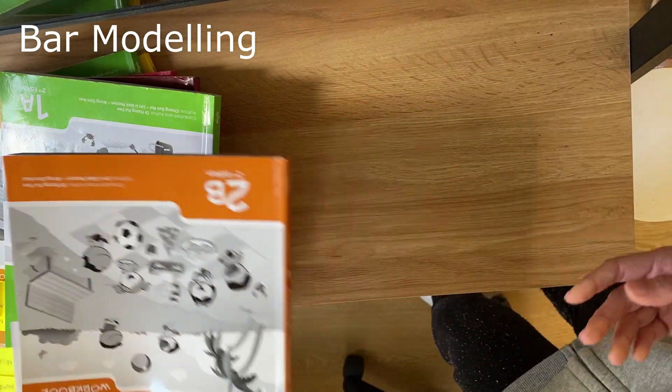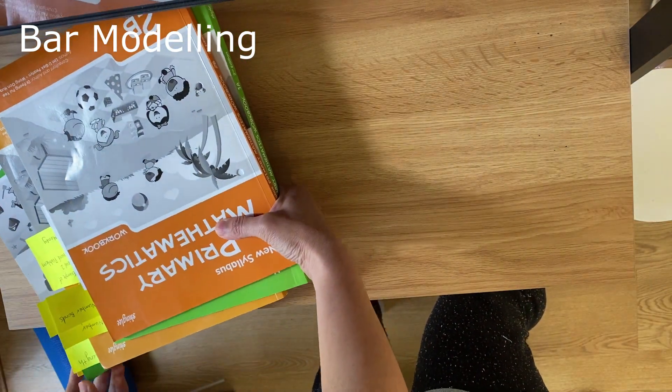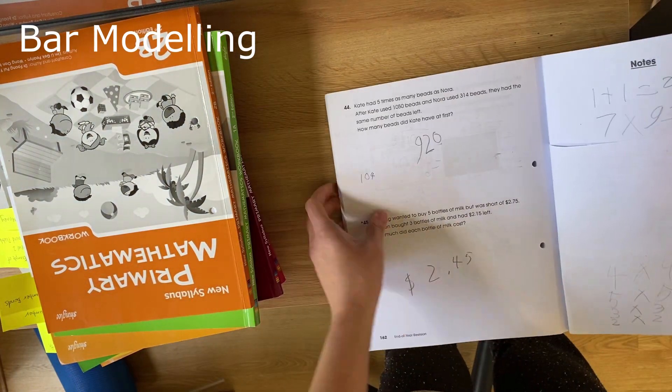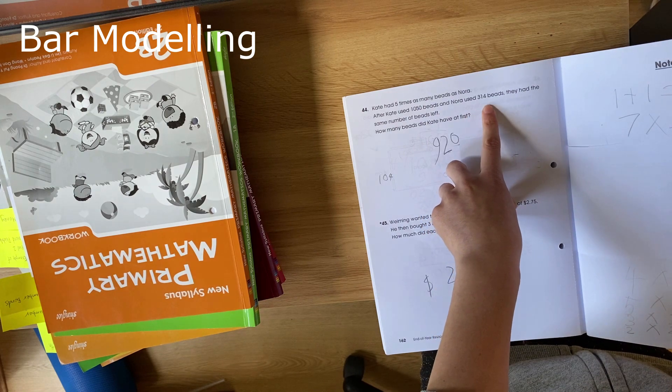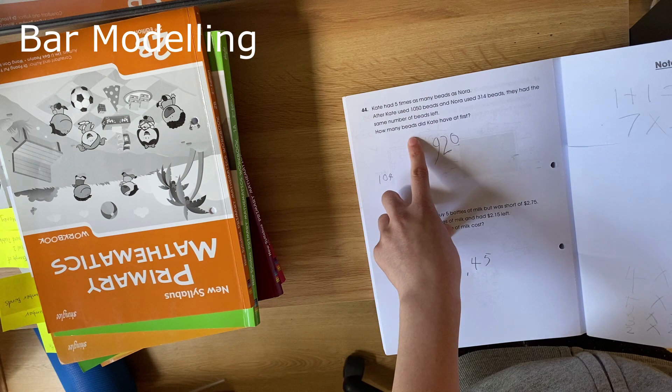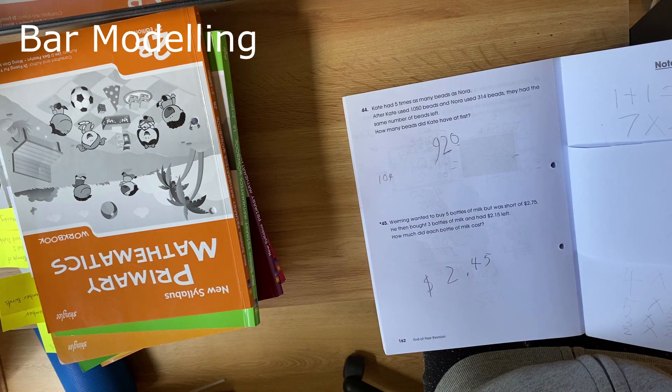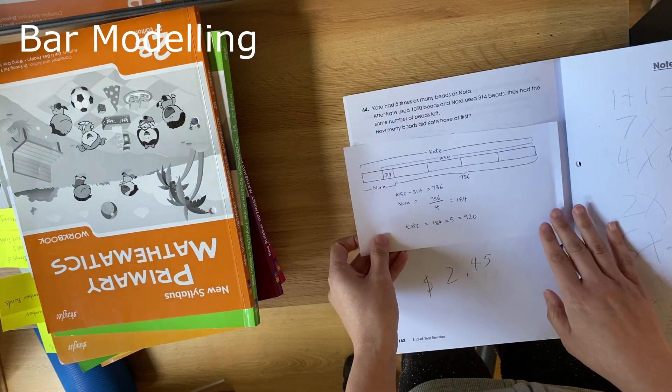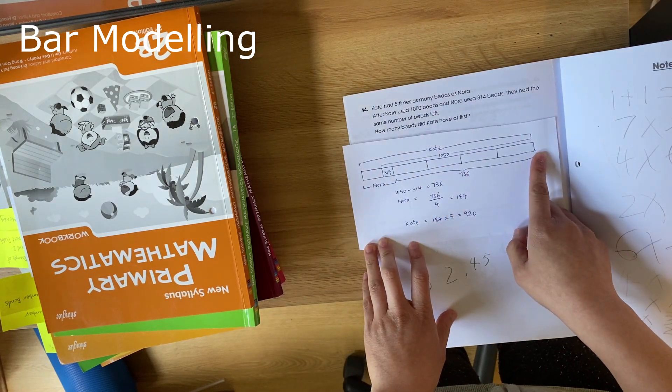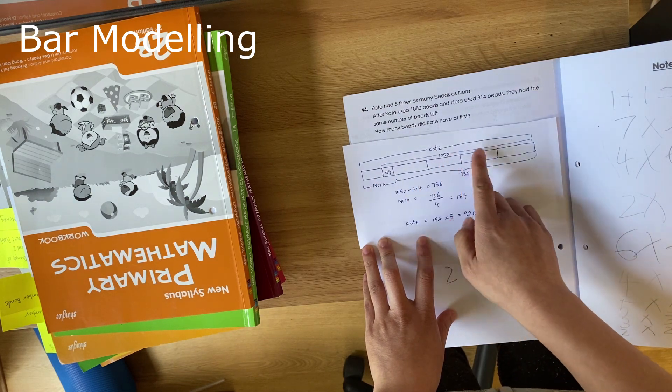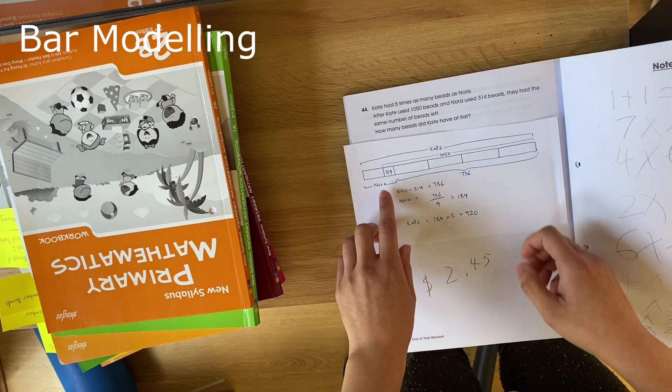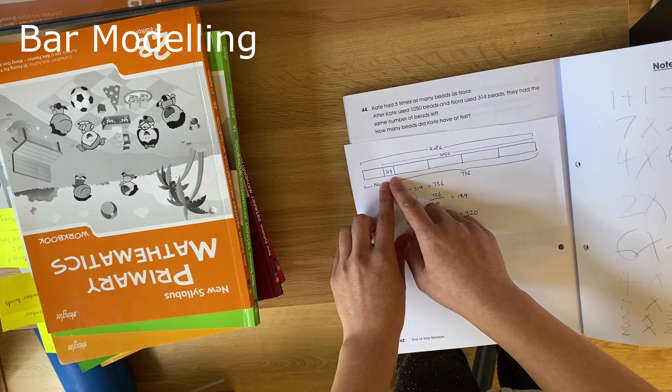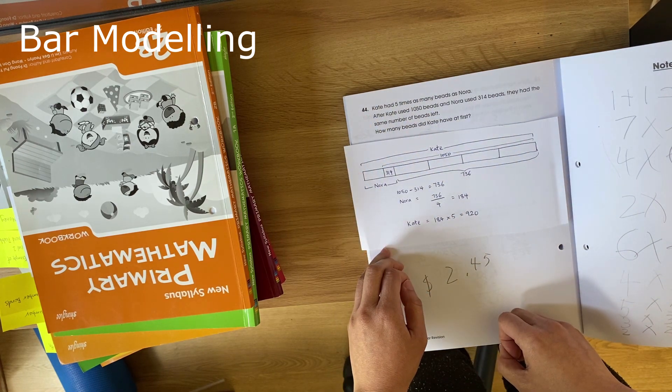I'll show you another bar modelling example from the level 4. Alright, so this one, Kate had five times as many beads as Nora. Kate used 1050 beads and Nora used 314 beads. They had the same number of beads left. How many beads did Kate have at first? So that again, I can work out using algebra pretty easily, but that's not what they're looking for here. So they want you to put all the information here into a bar model. So Kate had five times as many beads as Nora. So one, two, three, four, five to represent Kate and one to represent Nora. After Kate used 1050 beads, and Nora used 314 beads, they had the same number of beads left.